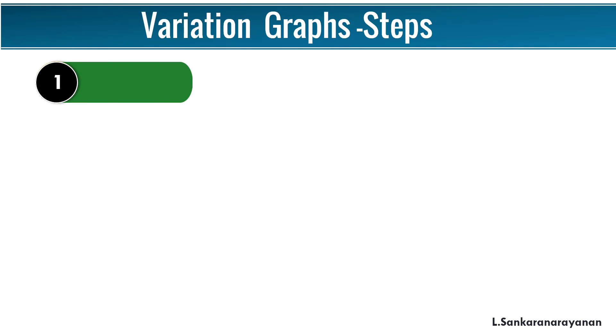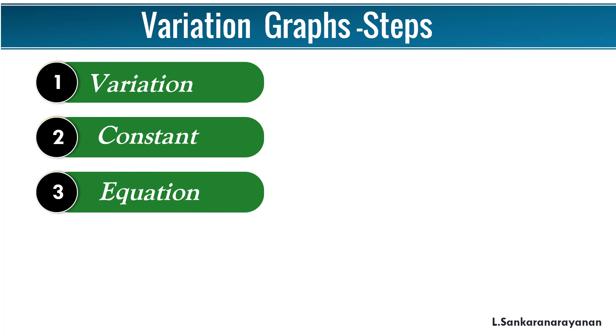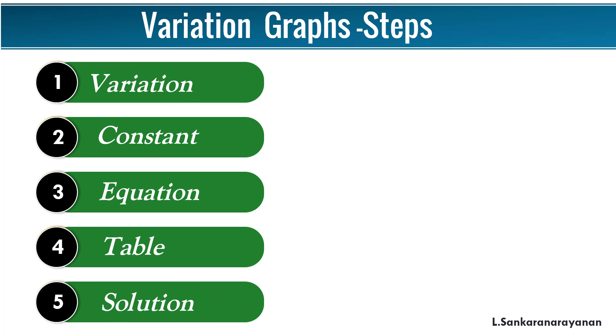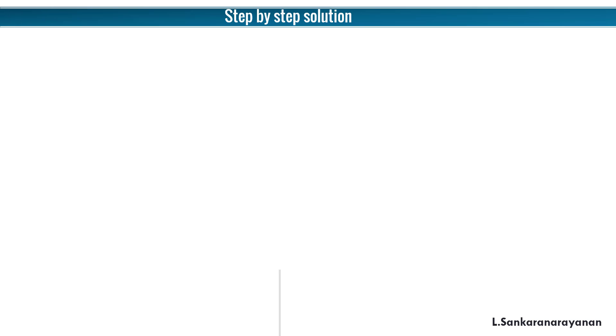Now you are going to see the steps. The first one is Variation, second one is Constant, third one is Equation, fourth one is Table, fifth one is Solution. Variation, constant, equation, table, solution. These are all the five steps to find the solution of a graph. You can remember these five steps by a mnemonic: Vice Captain Eats Tomato Slice. You see that words V-C-E-T-S. We can use this mnemonic to remember these steps.